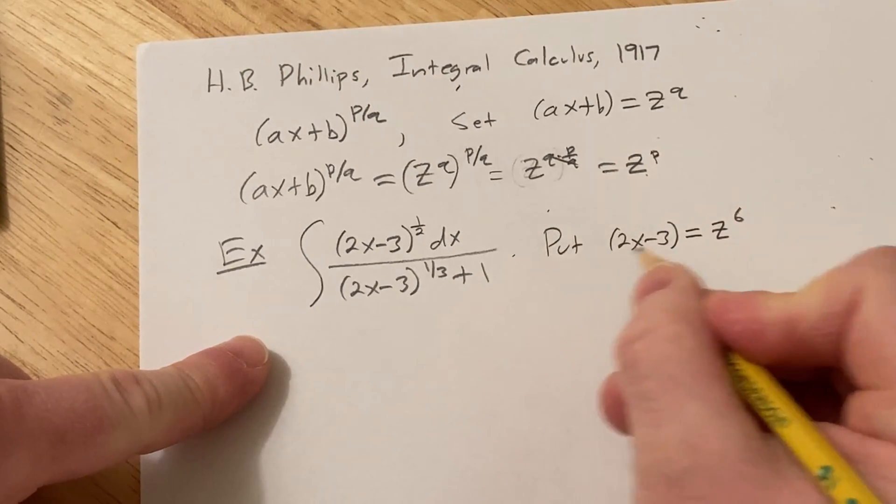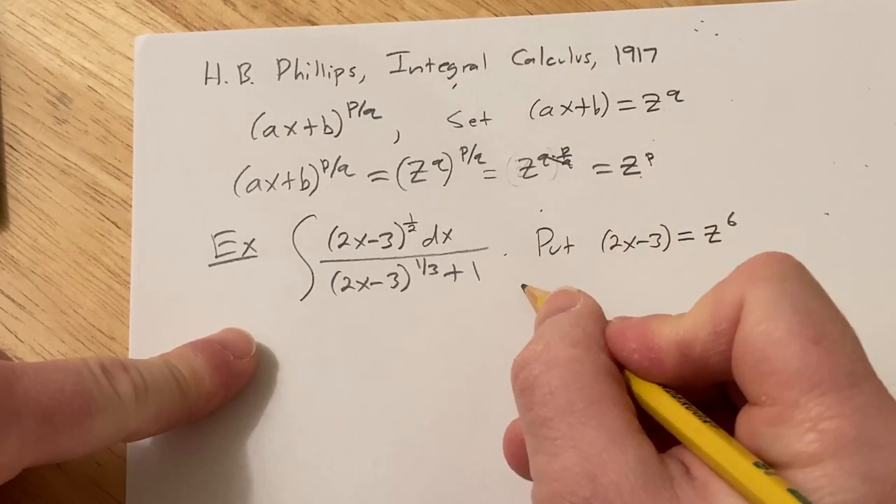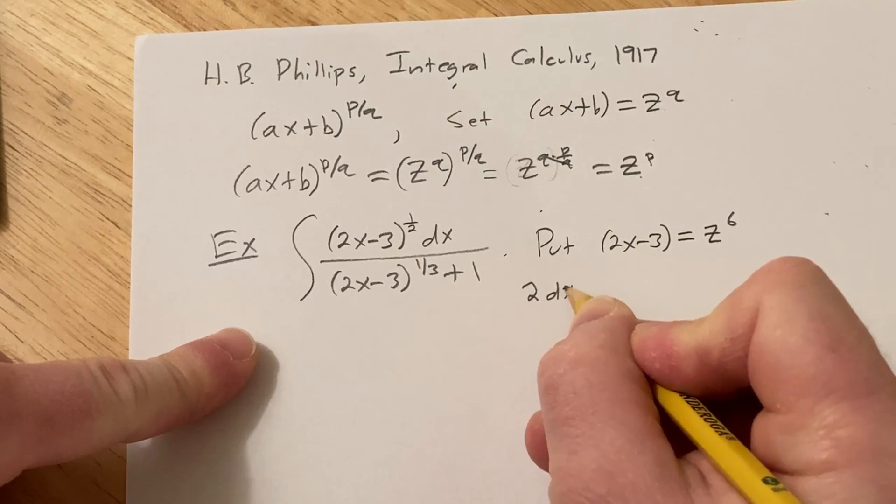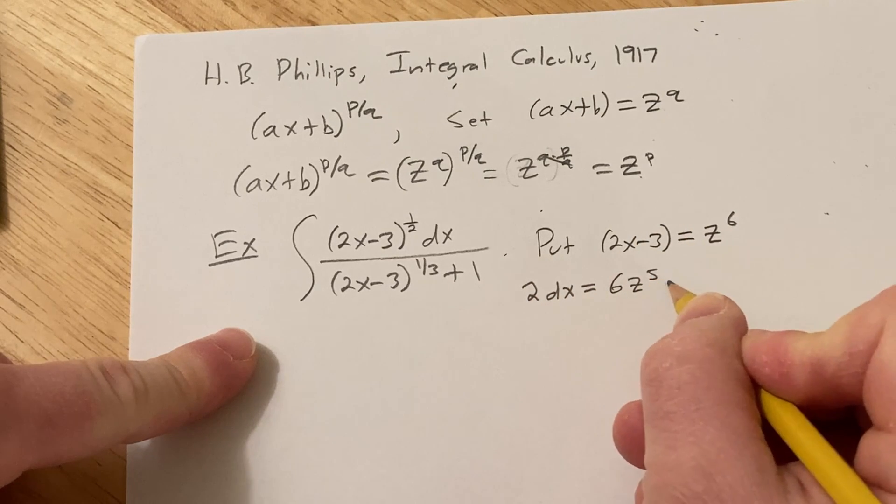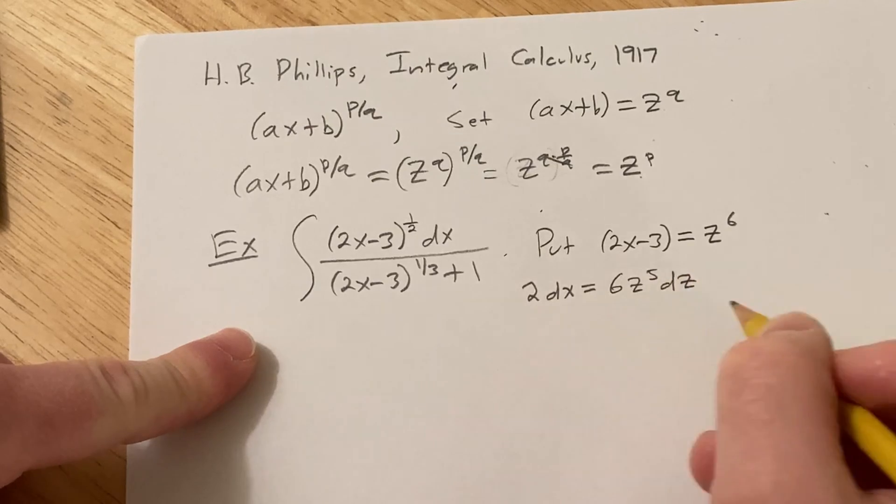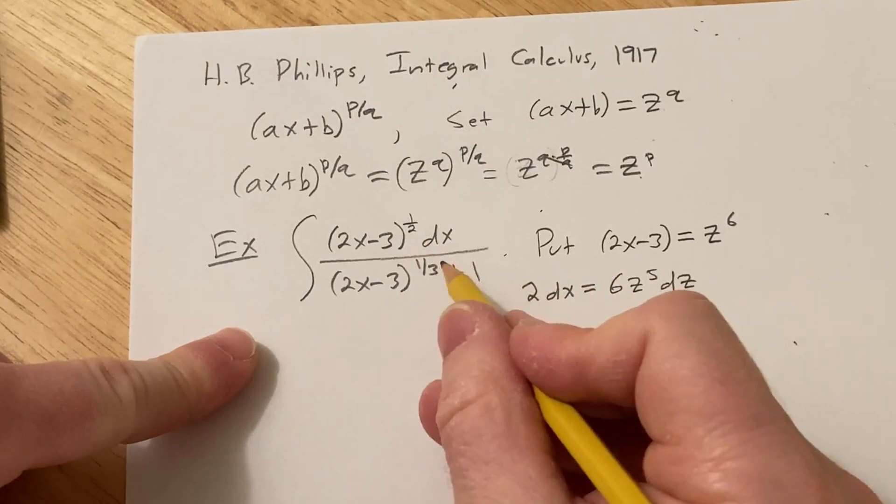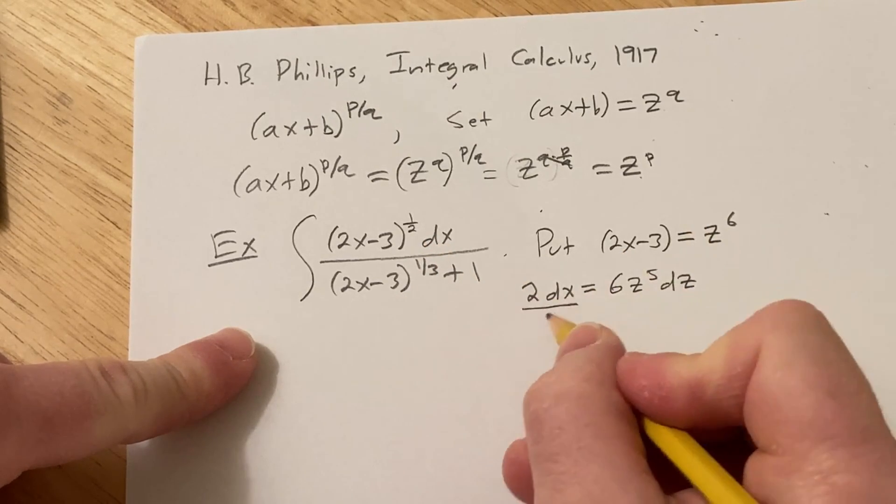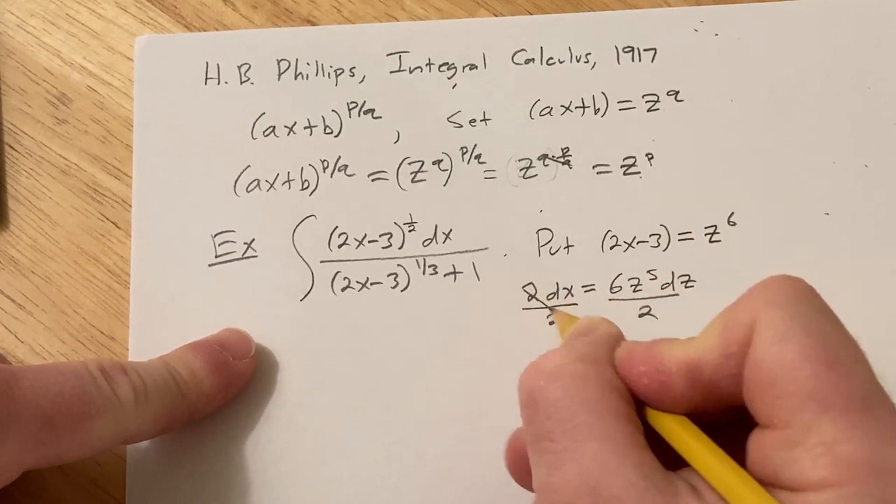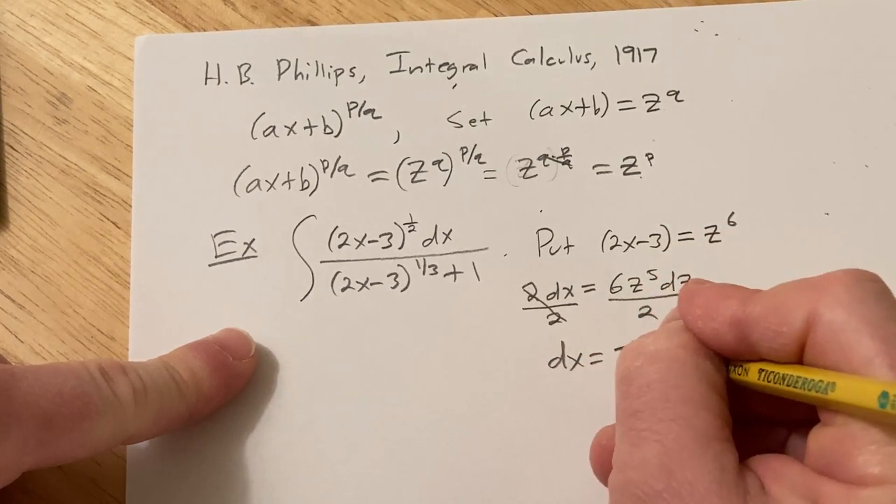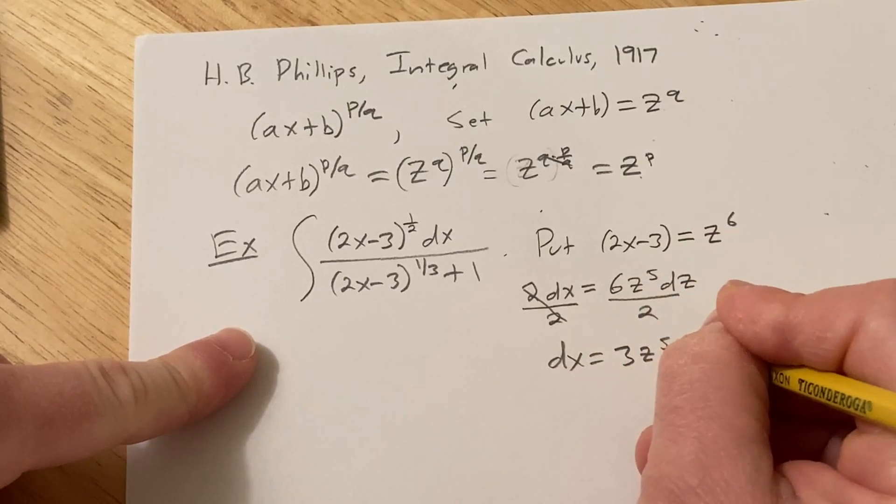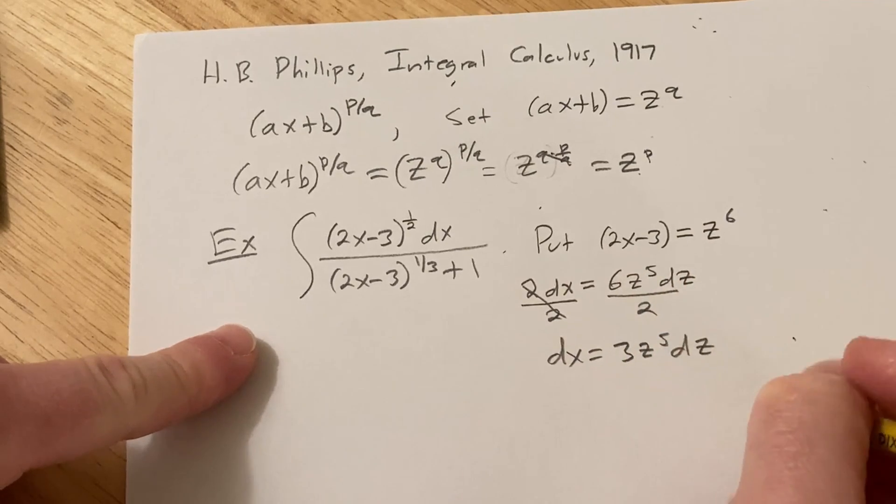Now differentiating both sides of this, we simply get 2dx equals 6z^5 dz. And then we don't have a 2 in the integrand, so let's divide by 2. This gives us dx equals 3z^5 dz.